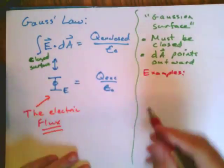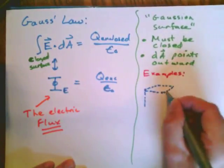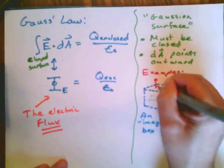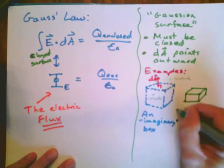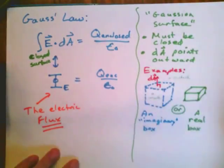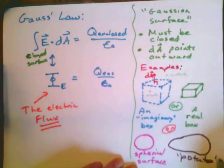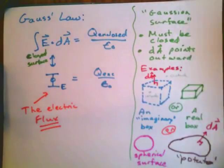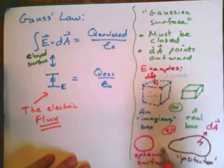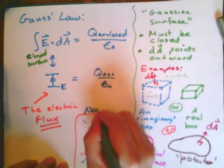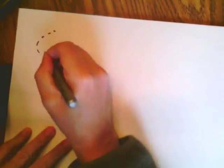Good examples of Gaussian surfaces include an imaginary cube — imaginary in the sense that it doesn't correspond to something physical — with charges placed inside, where the area vector points outward. A real physical box is also acceptable. The surface of a sphere or the surface of a potato are also good Gaussian surfaces, as long as the surface is closed. The surface of a bowl, which is open, is not a valid Gaussian surface.